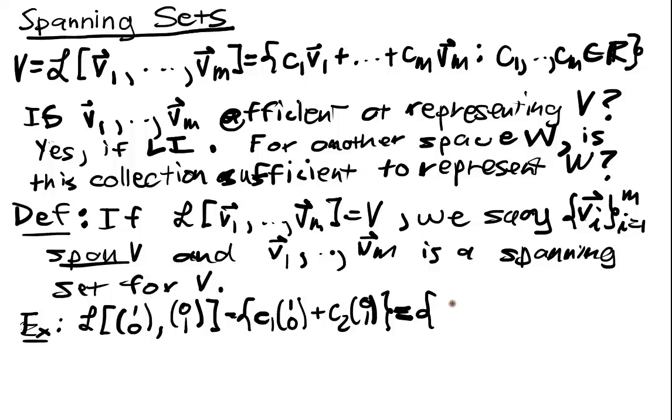And that's going to be in turn equal to the set of all vectors (C1, C2), of course just by adding these two things together for all real vectors and that's just equal to R2.